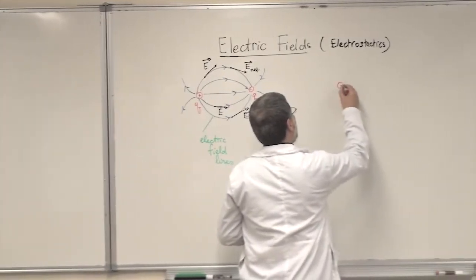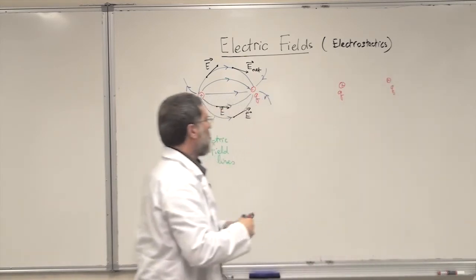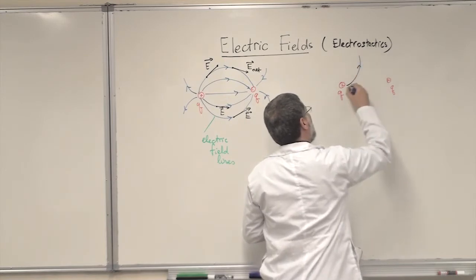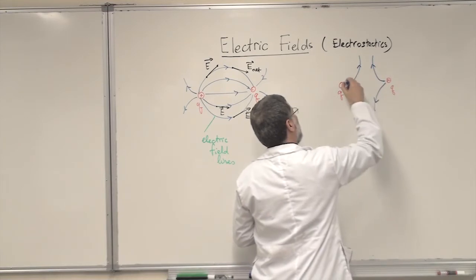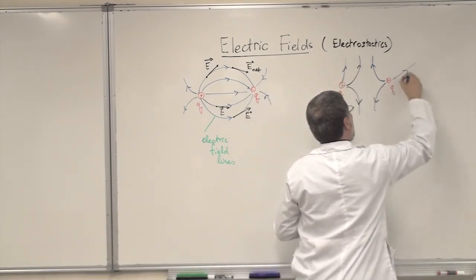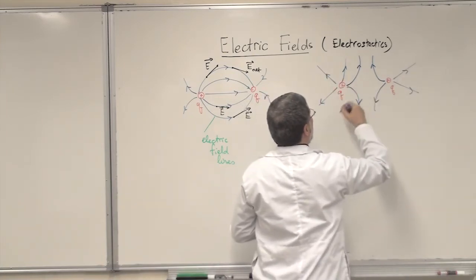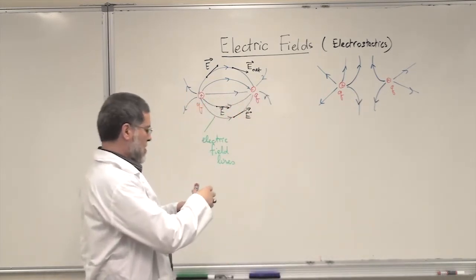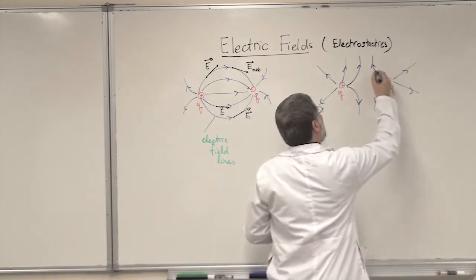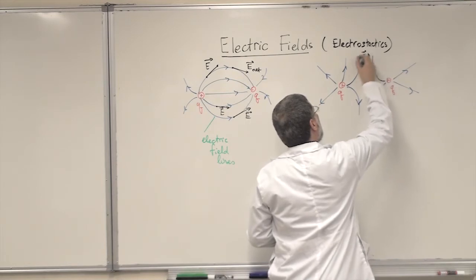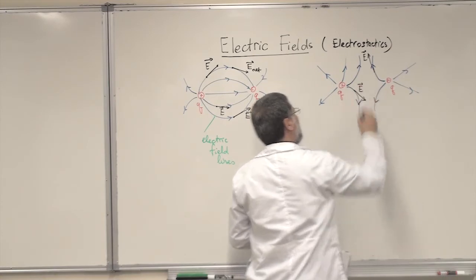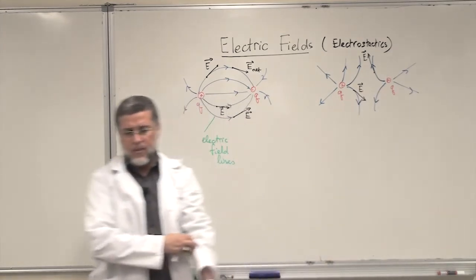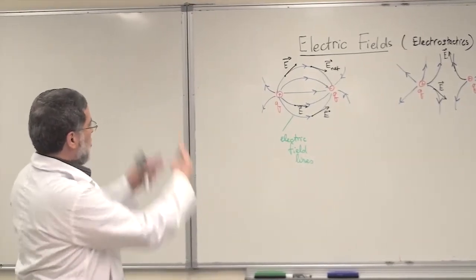For two positive charges close to each other, the electric field lines go radially outward from both charges. Notice there is no electric field at the midpoint between two equal positive charges. To find the electric field vector at any point, take the tangent to the electric field line at that point. That's the electric field at different points for two charges close to each other.